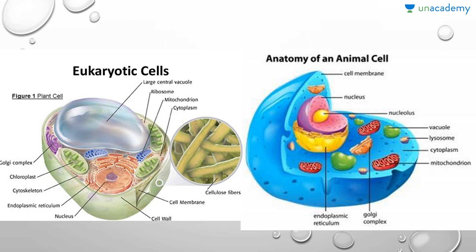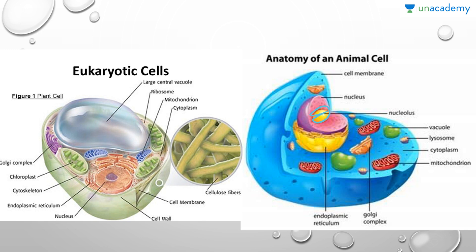Now let's look at a diagram of the eukaryotic cell — the plant cell and the animal cell. In the plant cell we can see the Golgi complex, the chloroplast — present because plant cells are photosynthetic — the cytoskeleton, the endoplasmic reticulum around the nucleus, the cell wall, the cell membrane, the cytoplasm, the mitochondrion in blue, ribosomes, and a large central vacuole which holds water.